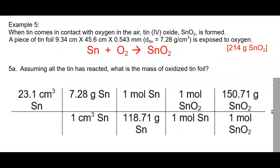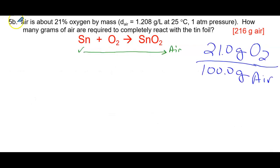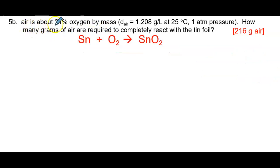Here is a written-out version with more understanding, and the typed final answer. Now, example 5B: air is 21% oxygen by mass. It tells us the density of air and temperature and pressure — we don't really care about the temperature and pressure part. How many grams of air are required to completely react with the tin foil?